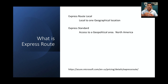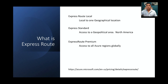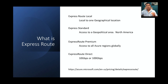ExpressRoute Premium gives you access to all regions globally. Then there's ExpressRoute Direct — the most expensive option — which is a direct connection into Azure at either 10 Gbps or 100 Gbps. If you need wire-level encryption, ExpressRoute Direct is the option to go with.